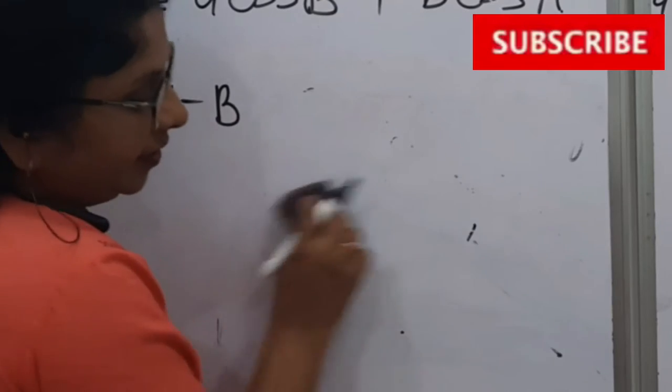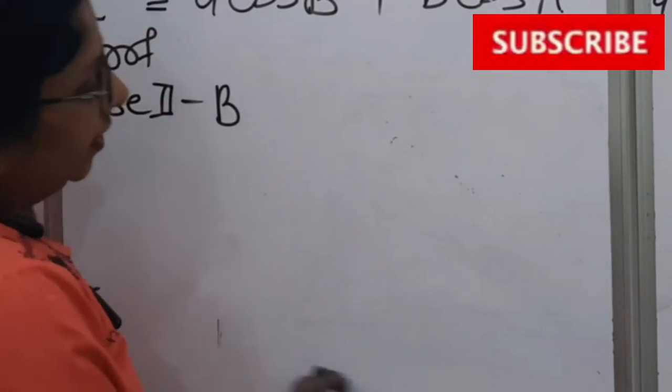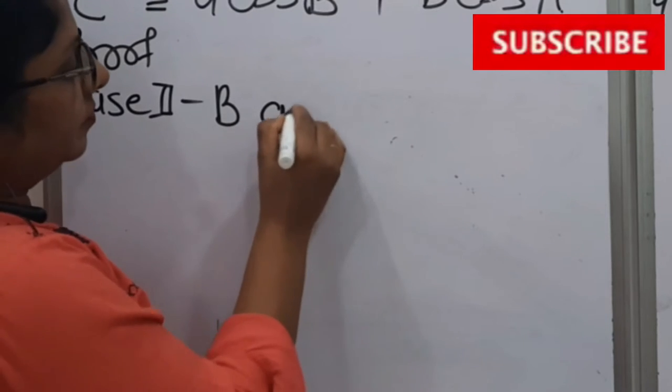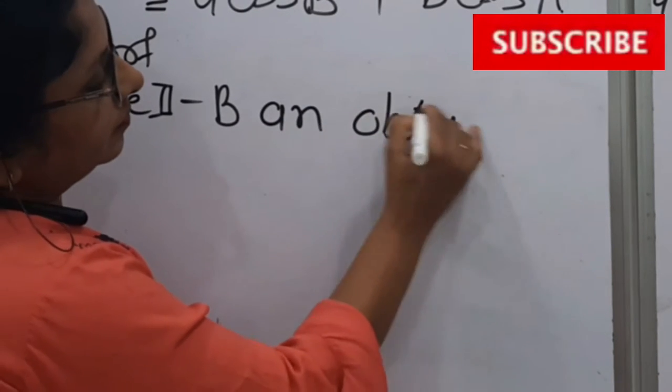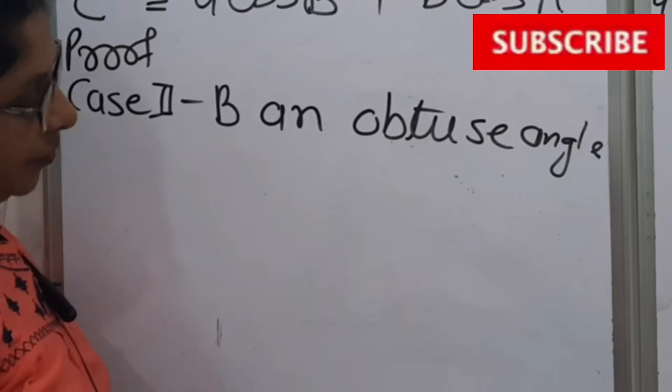So we need another triangle here in which B should be an obtuse angle. So we have to draw the figure like that.